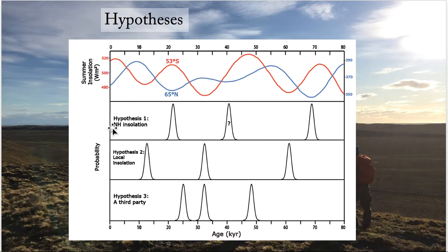The curves in the panels below represent the probability distribution you would expect given three scenarios. The first is that glaciers in Chile are linked by some global feedback to the northern ice sheets and vary according to the northern timescale, so we would see glaciers advancing in Patagonia when insolation in the northern hemisphere is low.